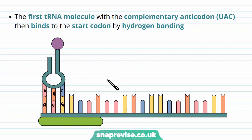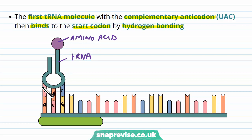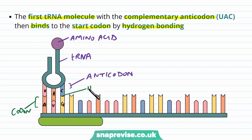Once the mRNA has bound to the ribosome, the codon gets read by the tRNAs. The first tRNA molecule — remember, tRNA is what carries each amino acid individually — the one with the correct complementary anticodon, which in this case is going to be UAC, then binds to the start codon by hydrogen bonding. With the tRNA molecule, we have one end which binds to an amino acid, and whichever amino acid is bound is dependent on the anticodon that the tRNA has. The anticodon is three nucleotides, just like a codon, and it is complementary to the codon on the mRNA. Whichever tRNA is complementary will form hydrogen bonds with the codon.